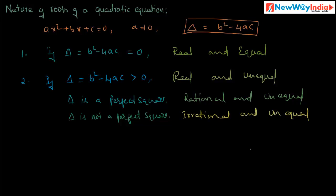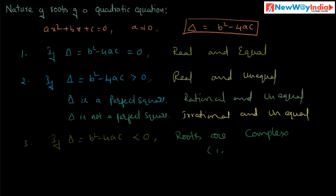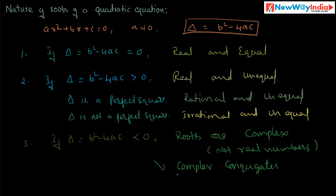By using the discriminant we can determine the nature of the roots of a quadratic equation. Case 3: if delta, that is b squared minus 4ac, is less than 0, then the roots are complex — not real numbers. In this case the roots are complex conjugates.